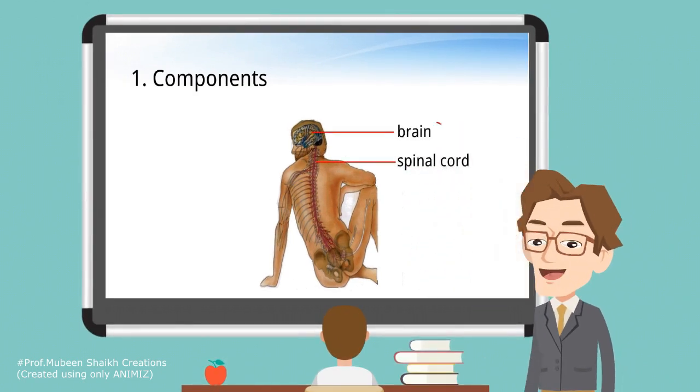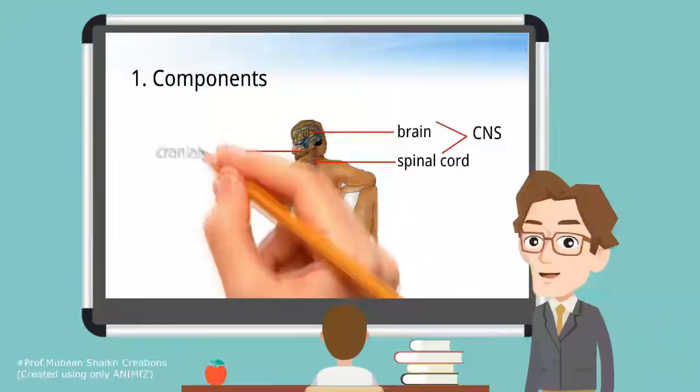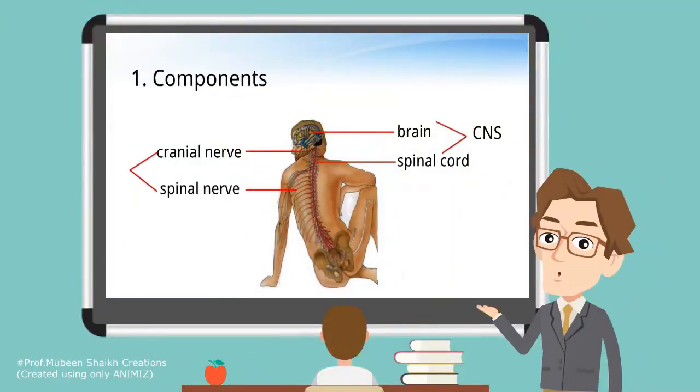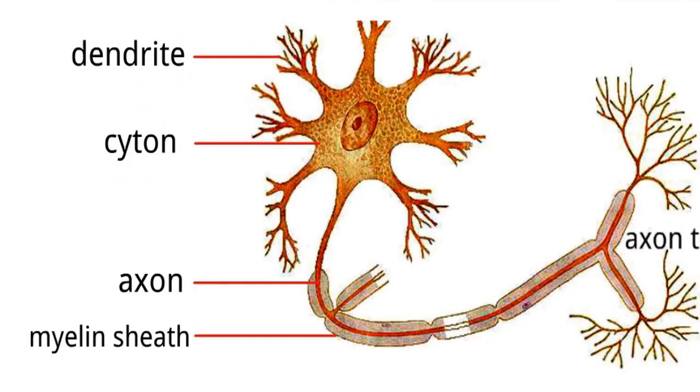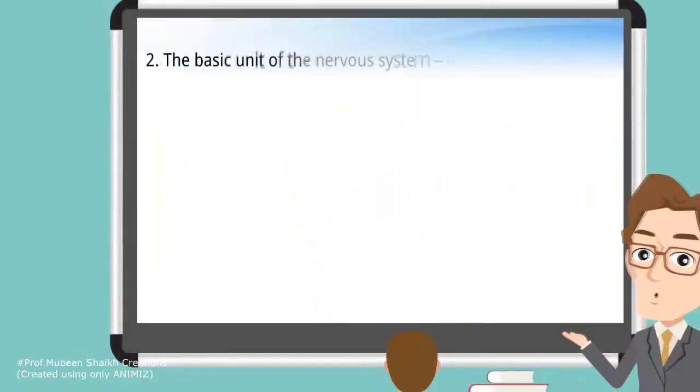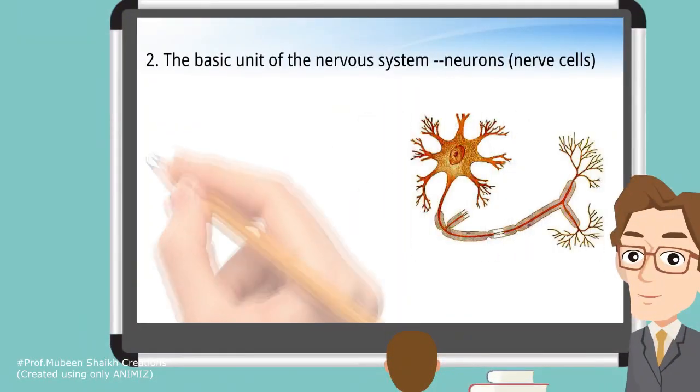spinal cord. The peripheral nervous system includes the cranial nerve and the spinal nerve. The single neuron has different parts like dendrite, cytone, axon, myelin sheath, and axon terminal. The basic unit of the nervous system is the neuron, which includes